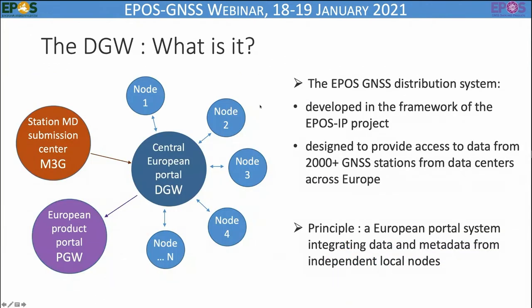The EPOSGENESIS distribution system was developed in the framework of the EPOSIP project. It was designed to provide access to data for more than 2,000 stations from data centers across Europe. The principle of the system is quite simple: it's a European portal that integrates data and metadata from independent local nodes. This portal is also linked to the station metadata submission center that Karin just presented, and to the European product portal that will be presented tomorrow.